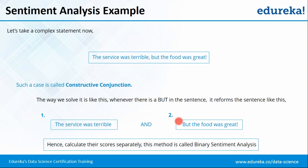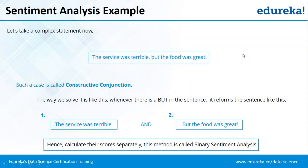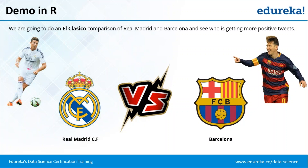Any doubts until here? Alright, most of you are giving me a go. Our next section is the demonstration. We'll be implementing this algorithm in R. For all football lovers, we're doing an El Clasico comparison between Real Madrid and Barcelona to decide which one is better.